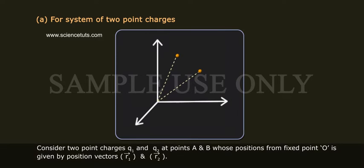For System of Two-Point Charges. Consider two-point charges Q1 and Q2 at points A and B whose positions from fixed point O are given by position vectors R1 bar and R2 bar.